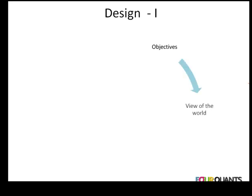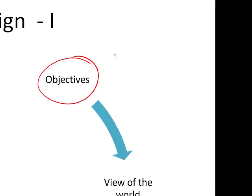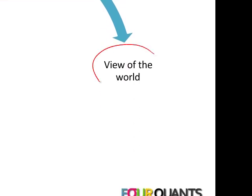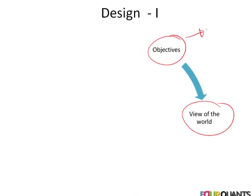All we are talking about is starting with a range of objectives. These objectives determine what we want to see when the model is finished, which then requires us to build a view of the world. For example, if I want to simulate oil prices, that's my objective. I then need to build a view of the world that says: what relationships am I interested in when it comes to oil, and are these relationships determining, forecasting, or predicting prices going up or down?